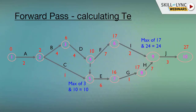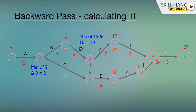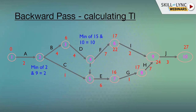Now calculating the backward pass: we'll be moving from event ten to event one, subtracting the durations from 27 down to zero. Starting from the rightmost corner, ten minus three gives 24. Now the paths diverge: 24 minus seven gives 17, and 24 minus two gives 22. Then 17 minus one, and similarly when you come to D you will be having two TLs — one from path number two, that is ten, and one from path number one.